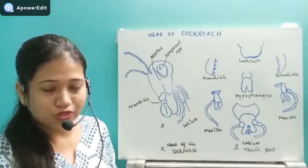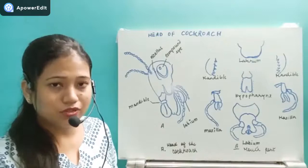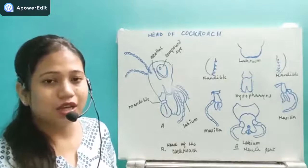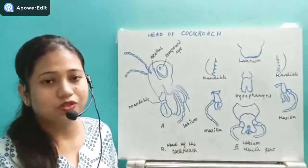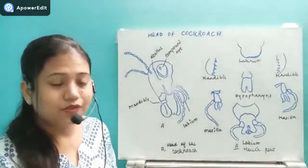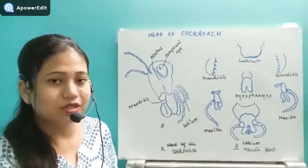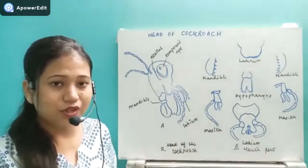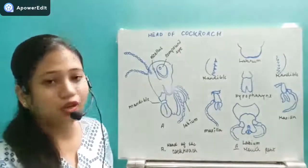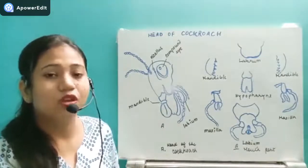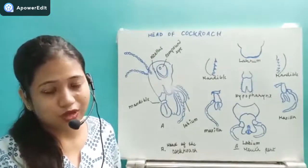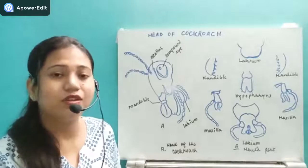The mouth is the anterior-most region. The thorax is the middle region, which has three segments. The abdomen is composed of 10 segments. In this video we are going to discuss the mouth part — the anterior-most region and the head region — and then we will see the jointed legs. The cockroach belongs to phylum Arthropoda because it has jointed legs.